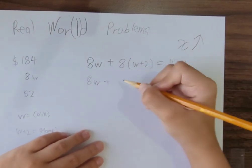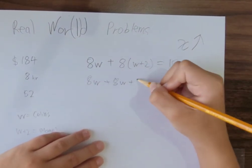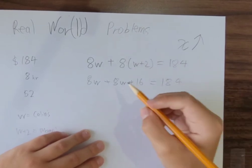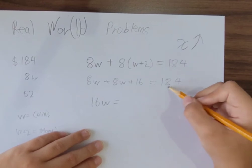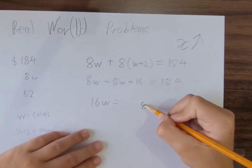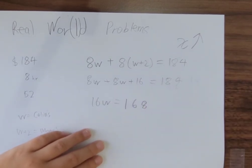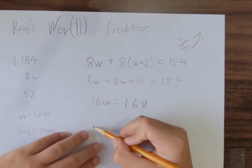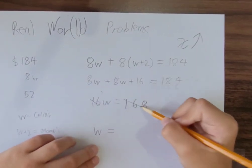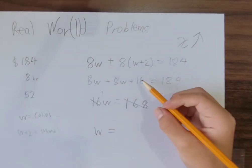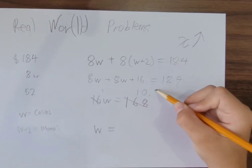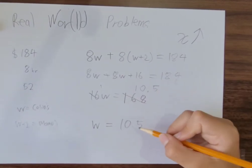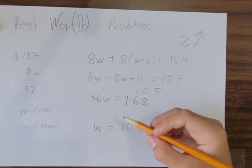Let's simplify this. 8W plus 8W plus 16 equals $184. Combine these two together: 16W equals $184 minus 16, which equals $168. Divided on both sides, W equals $10.50.